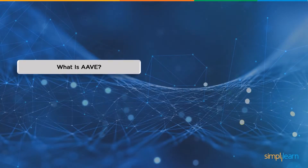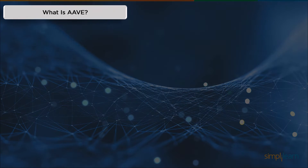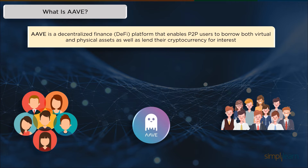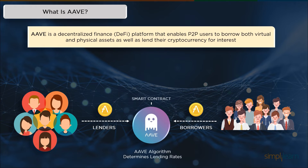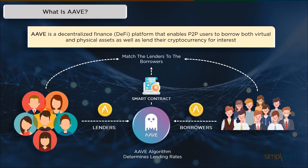Aave is technically a decentralized application that allows people to lend and borrow cryptocurrencies, all without a middleman, in return for some fees. Aave uses an algorithm to determine the lending rates and match the borrowers with lenders using a smart contract. Smart contracts enable these assets to be managed by a distributed network of computers running its software. When lenders deposit cryptocurrency into the protocol, it is routed to a liquidity pool, where it is used to meet the demands of the protocol's borrowers.